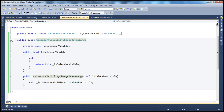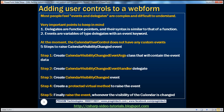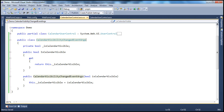That's step one. Now let's look at step two: create the CalendarVisibilityChangedEventHandler delegate. We are coming to delegates now. Delegates are function pointers and their syntax is very much similar to that of a function. One of the main purposes of delegates is to hook up event handlers with events of controls.